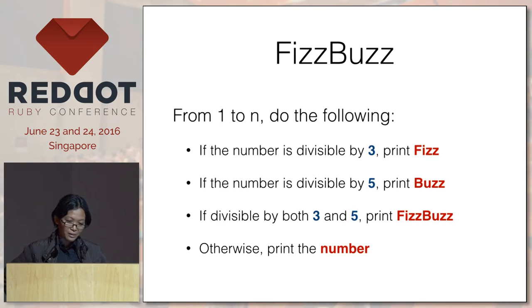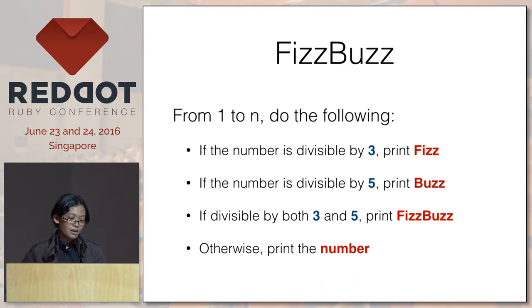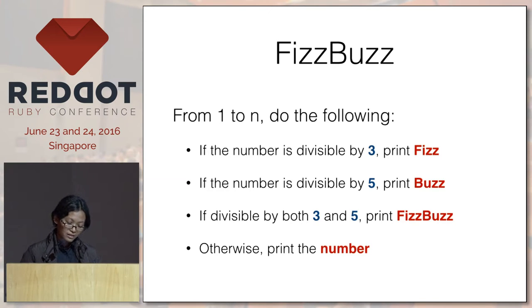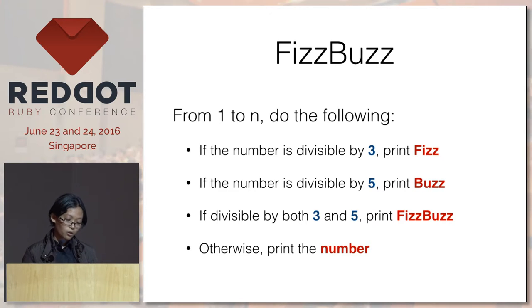For an overview of golf, let's try FizzBuzz. If you're not familiar with FizzBuzz: given a number N, you iterate from 1 to N. If it's divisible by 3, print Fizz. Divisible by 5, Buzz. By both, FizzBuzz. Otherwise, print the number.